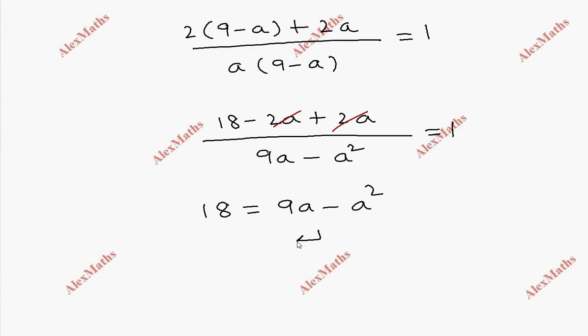Moving all terms to one side: a squared minus 9a plus 18 equal to 0.